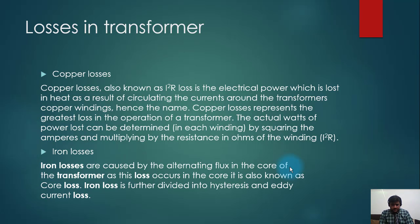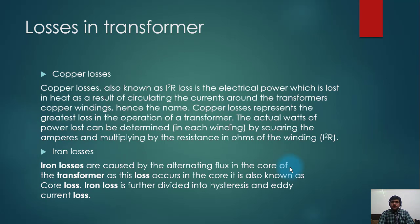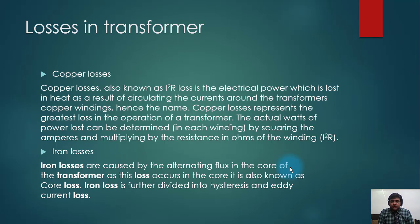If current flows through the winding, the winding has resistance, and a loss will be produced in the shape of heat. The energy in electrical form — part of it will be transformed into heat. The loss will be equal to I² × R.